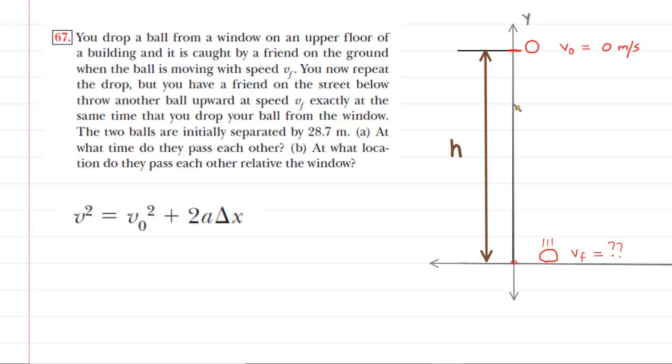In part one of this problem, what we're going to want to do is come up with an expression for the speed V sub f. We know that the ball is dropped from rest and therefore has an initial velocity of 0 meters per second. It falls a vertical displacement of h and then it reaches the ground level.